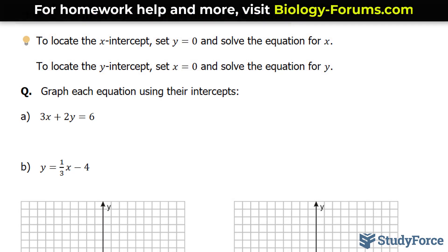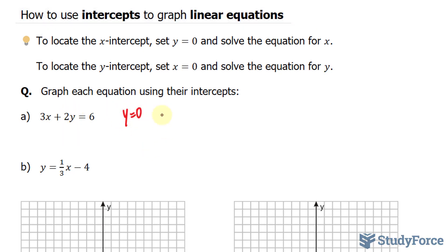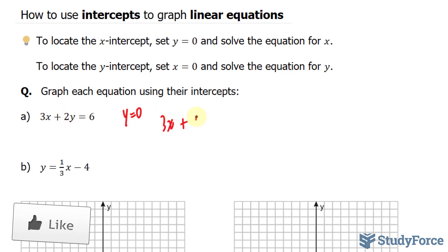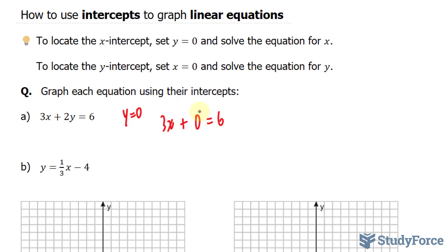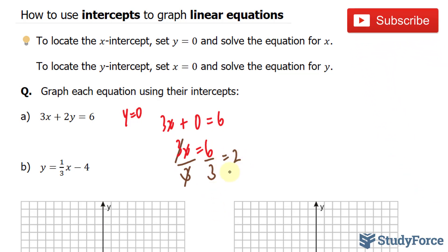I'll find the x-intercept by setting y equal to 0. So at y equals 0, I have 3x plus 2 times 0, which is 0, equals 6. It's a matter of finding what x is equal to, and I can do that by dividing both sides by 3. So 3x equals 6, and dividing both sides by 3, this gives us x equals 2. So we have an x-intercept at (2, 0).